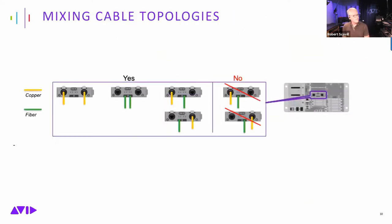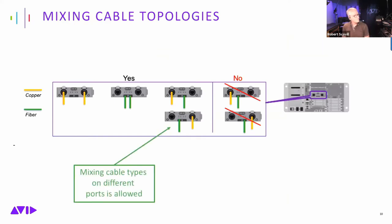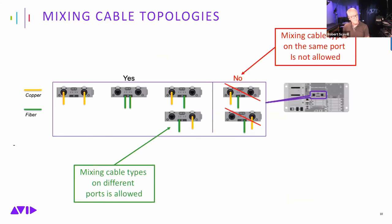The rule is you cannot mix cable topologies on the same port — you can't have copper Cat5 and fiber on the same port simultaneously. They must be separated by the A/B connection. This is illustrated in the manual's diagram.